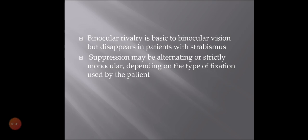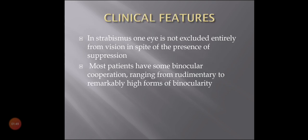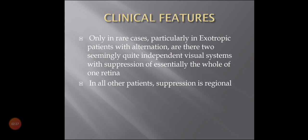Suppression may be alternating or strictly monocular depending on the type of fixation used by the patient. In strabismus, one eye is not excluded entirely from vision in spite of the presence of suppression — the squinting eye does not completely lose its visual acuity. Most patients have some binocular cooperation, ranging from rudimentary to remarkably high forms of binocularity. Only in rare cases, particularly in alternate exotropia, there are seemingly quite independent visual systems with suppression of essentially the whole retina of one eye.